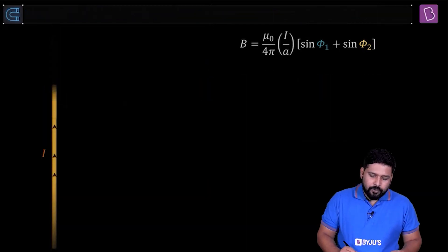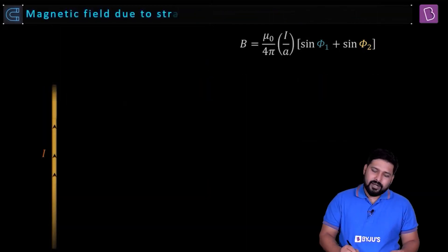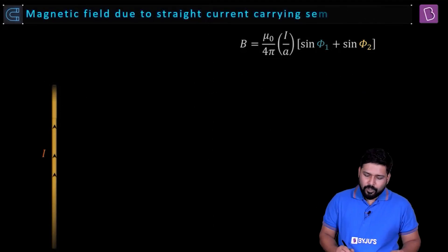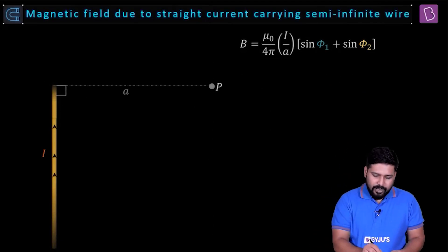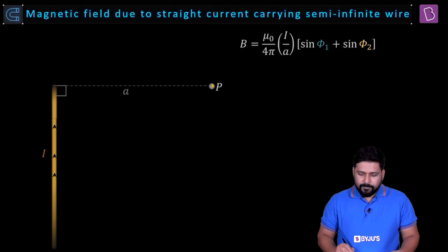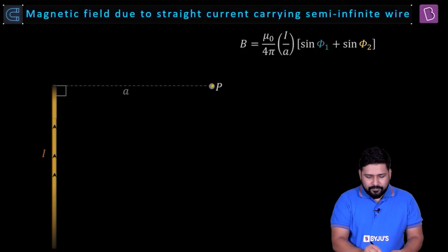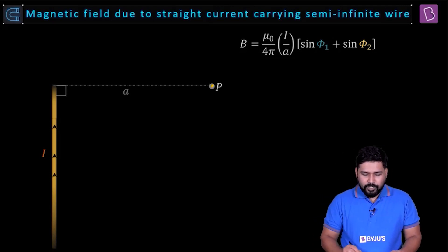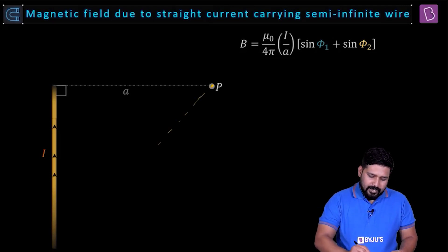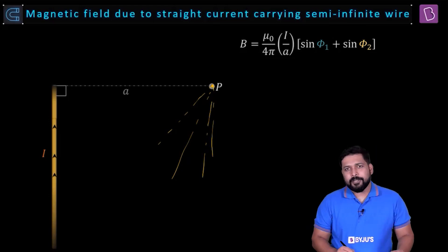Well, the second case could be a semi-infinite wire and near one of its ends. If I want to find the value of the magnetic field, then what happens? So if you take this point, well, what you can see is that phi 1 is equal to what? Zero degrees. But the other end, if you go on extending this, what will happen? This will go up to 90 degrees.